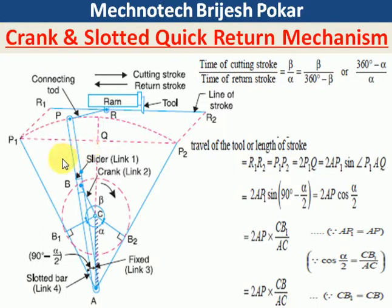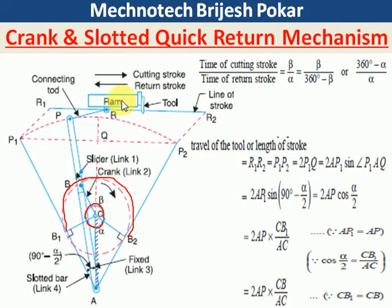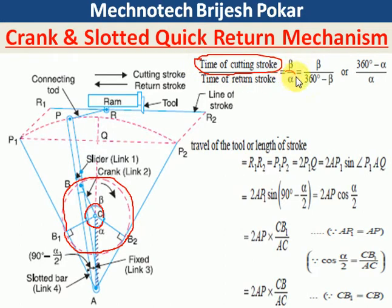Now, talking about the angles: beta is the forward motion angle. When the crank rotates from B1 to B2, it is the forward motion of the ram. When the crank returns to B1, it is the return stroke. The time of the cutting stroke corresponds to angle beta, and the time of the return stroke corresponds to angle alpha, where alpha equals 360 minus beta.